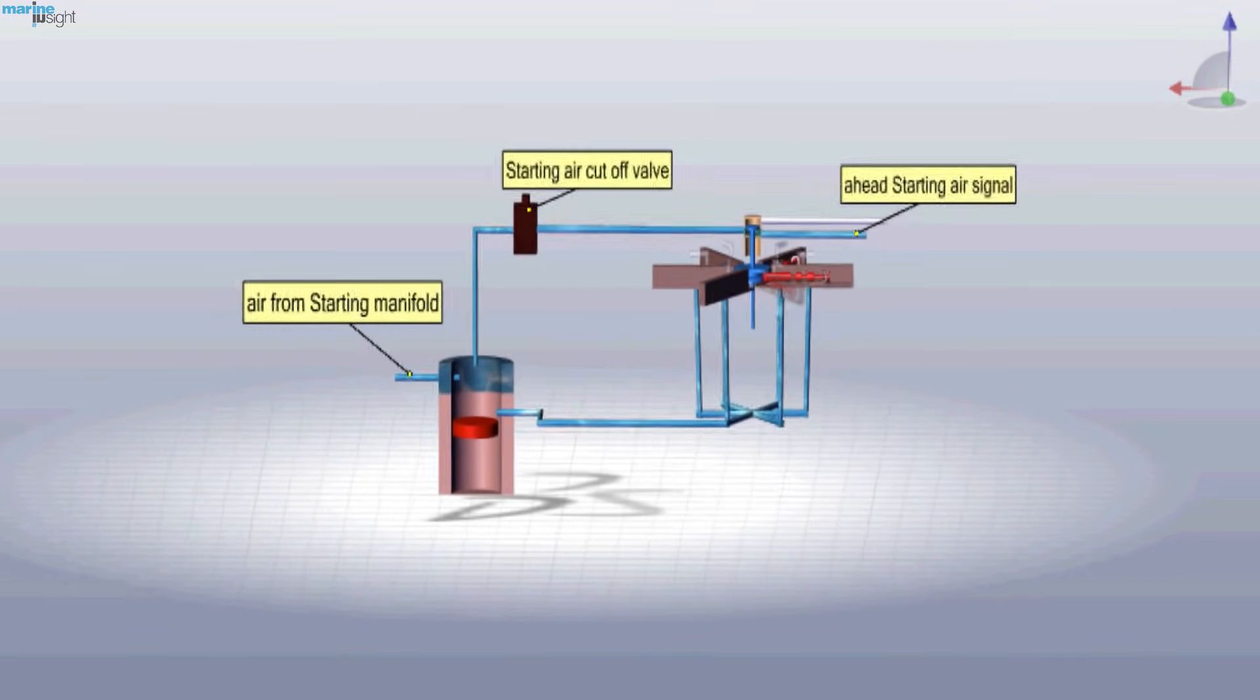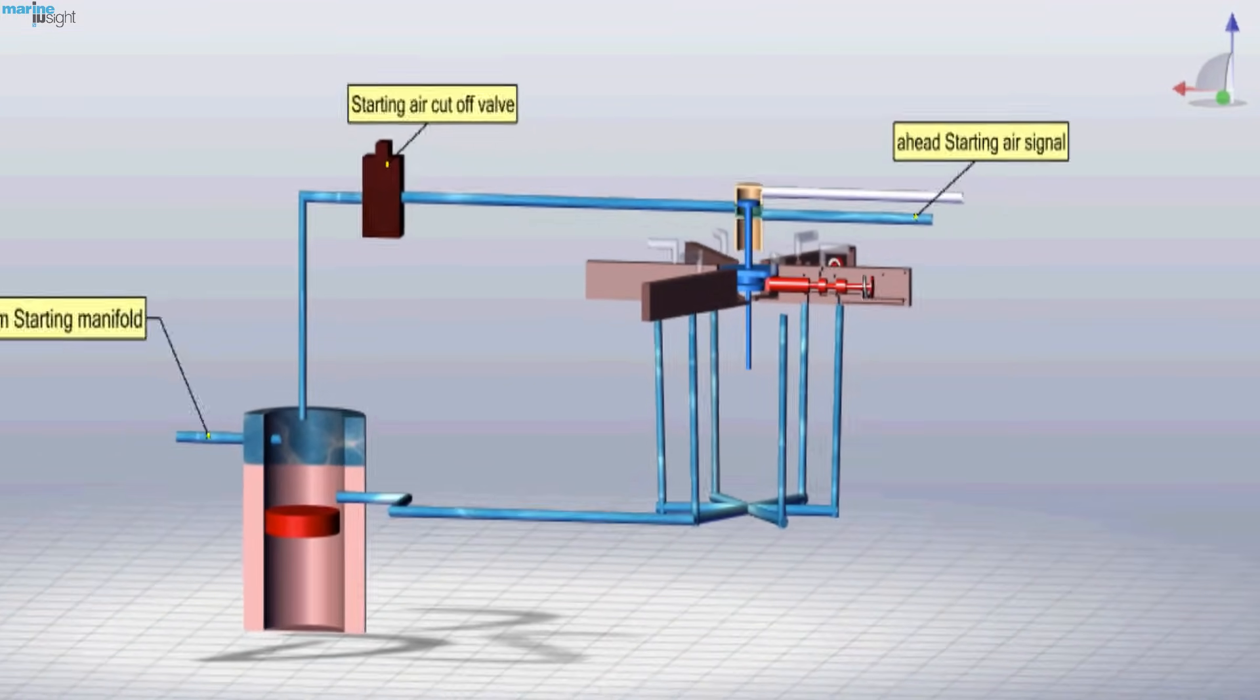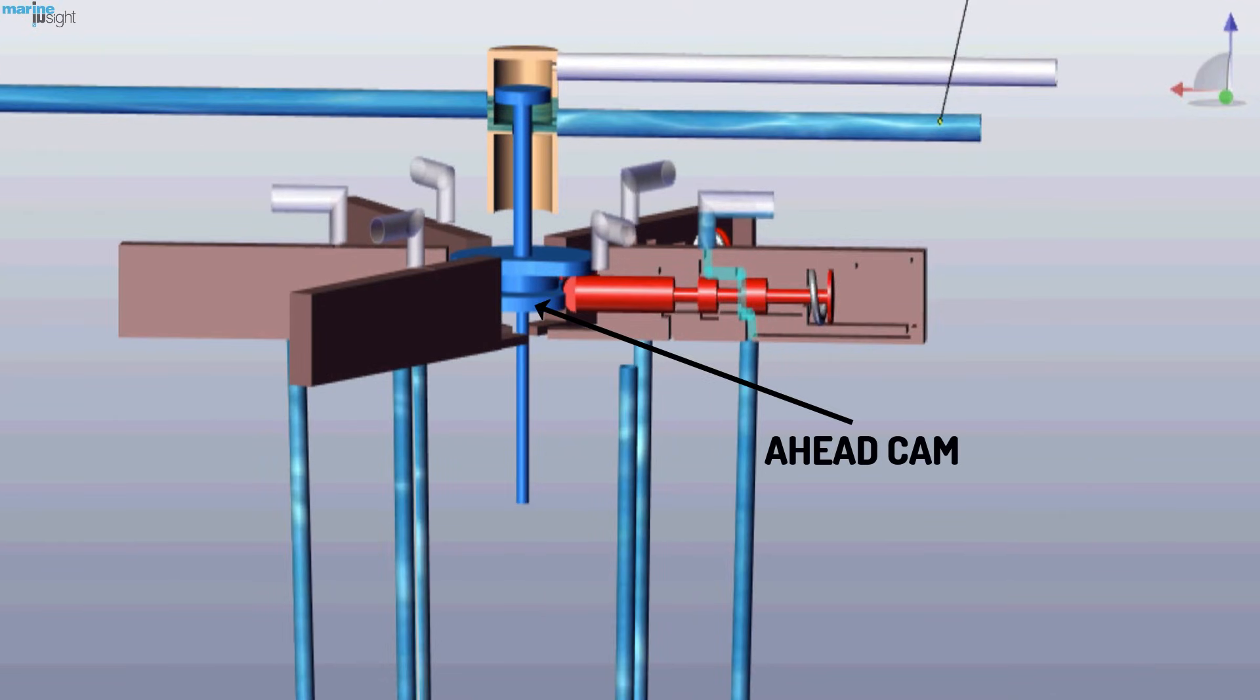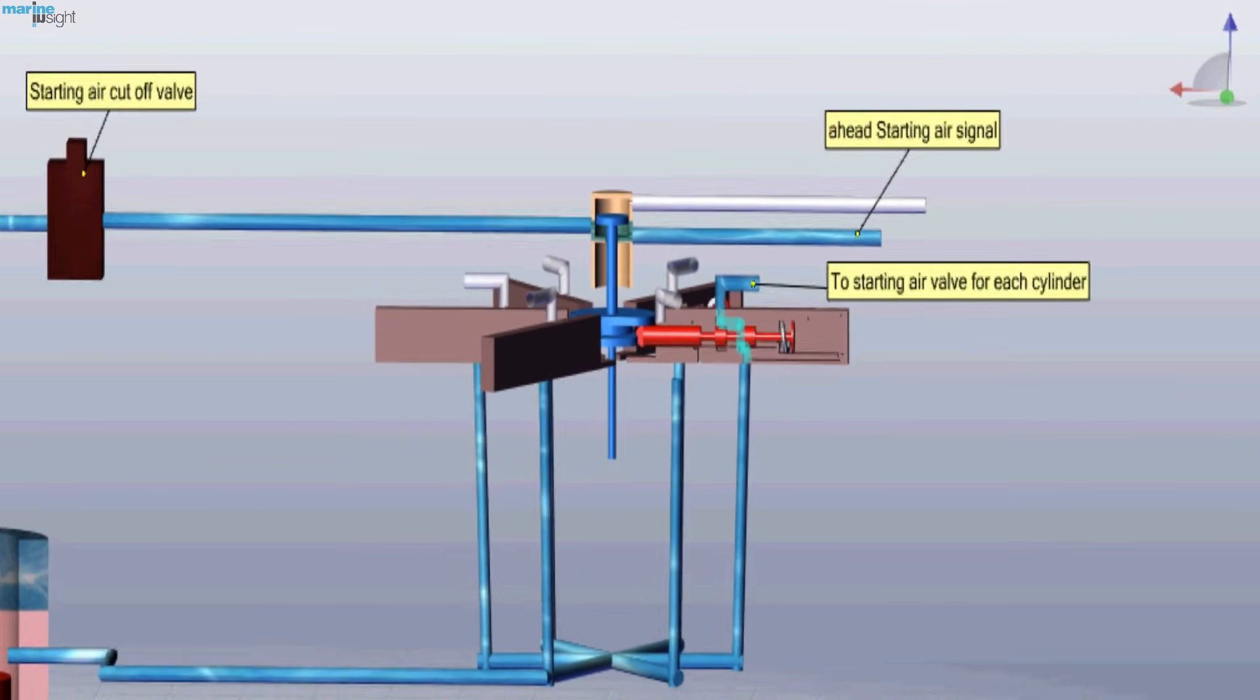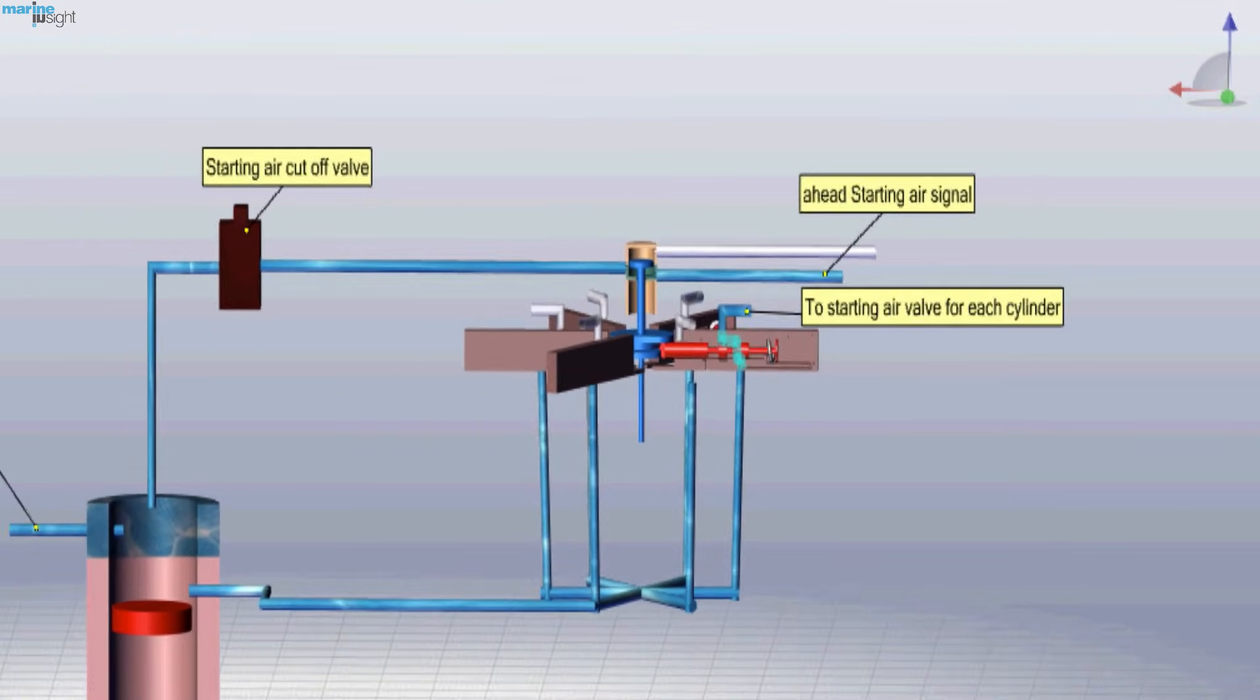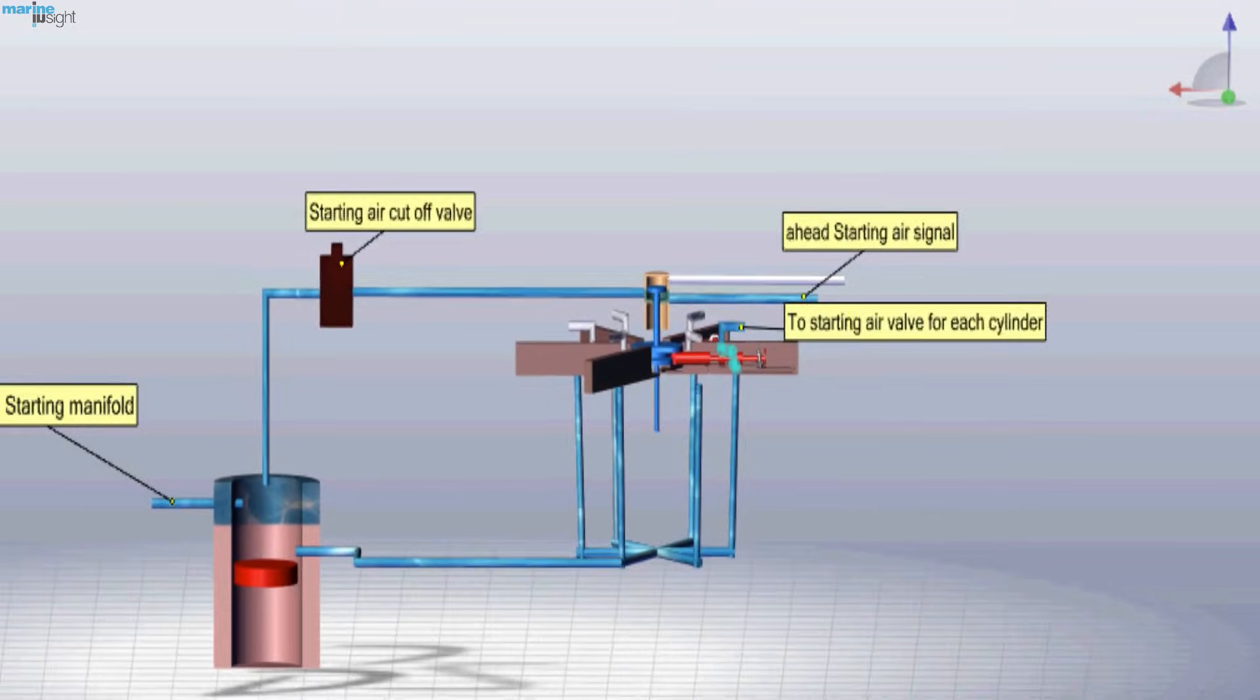Now, the air from the air distributor will be supplied to different cylinders as per the firing order. As the ahead cam rotates, the plunger which falls on the cam will move, allowing the air to pass through, delivering starting air to the combustion chamber.